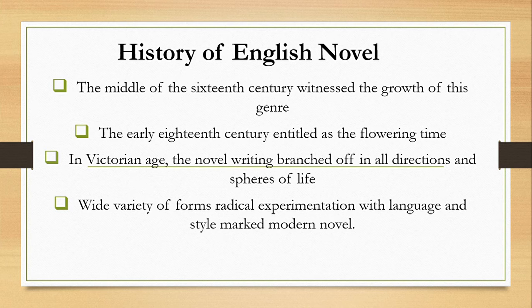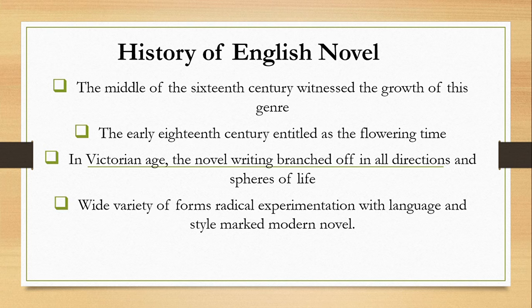His success lies in his realistic themes and techniques of narration. Henry Fielding wrote prominent works like Joseph Andrews, The History of Tom Jones, and The History of Jonathan Wild. Through his themes, characters, and dialogues, Fielding desired to expose the shame and hypocrisy in politics, society, and religion of the time.